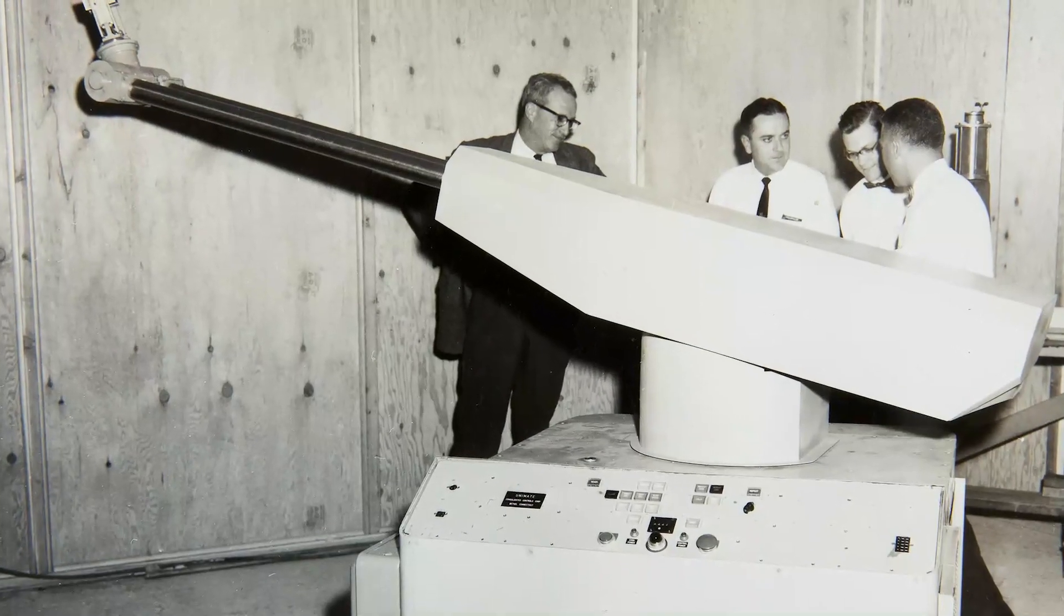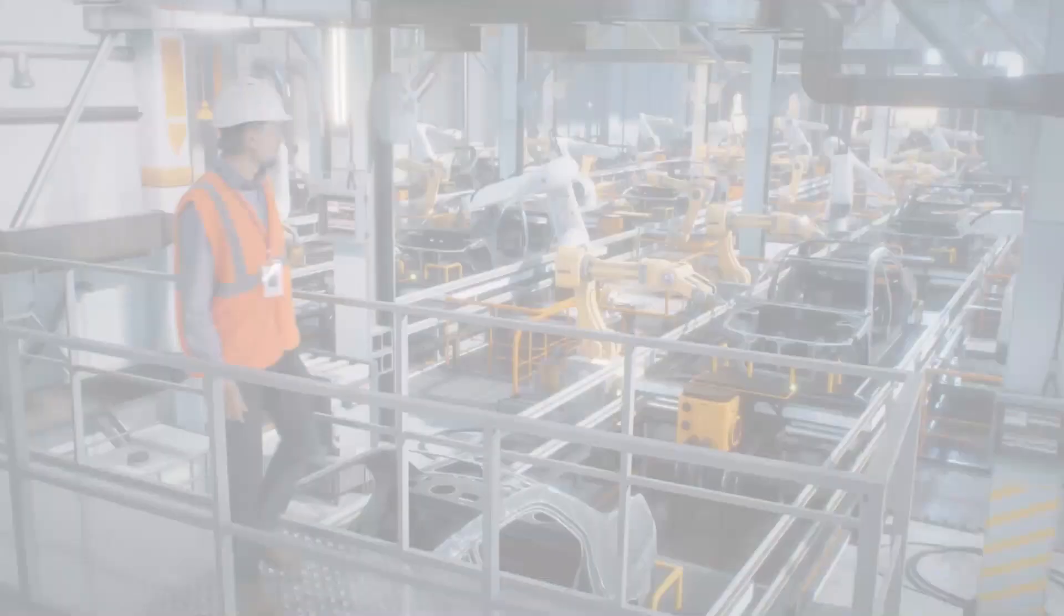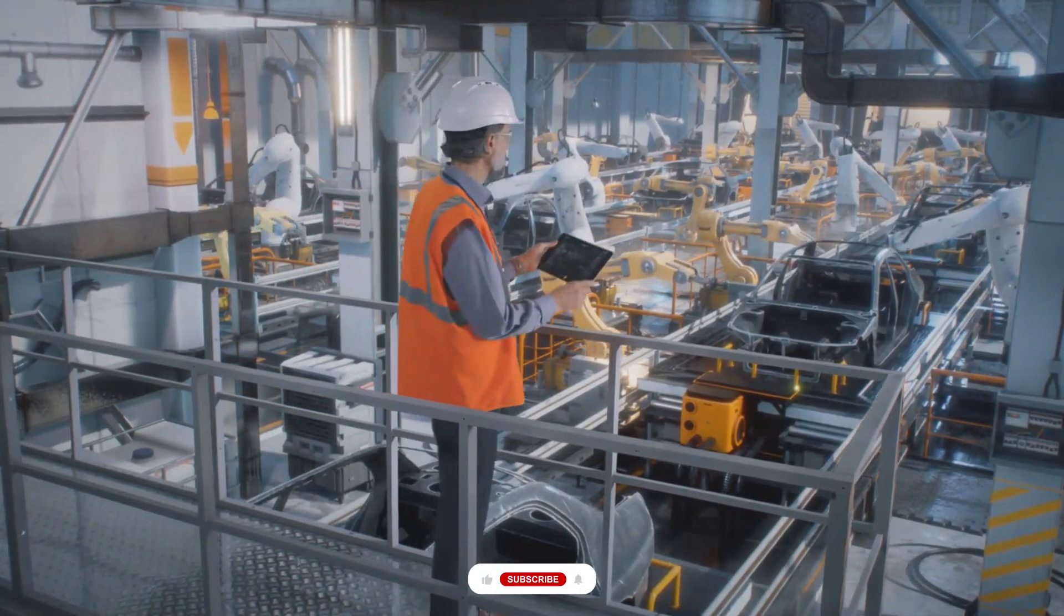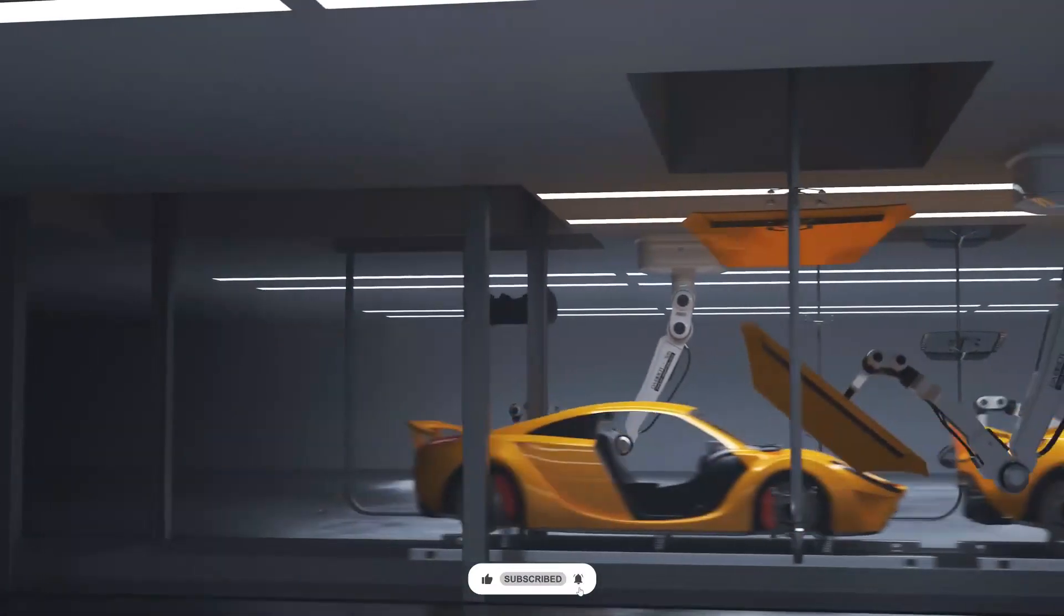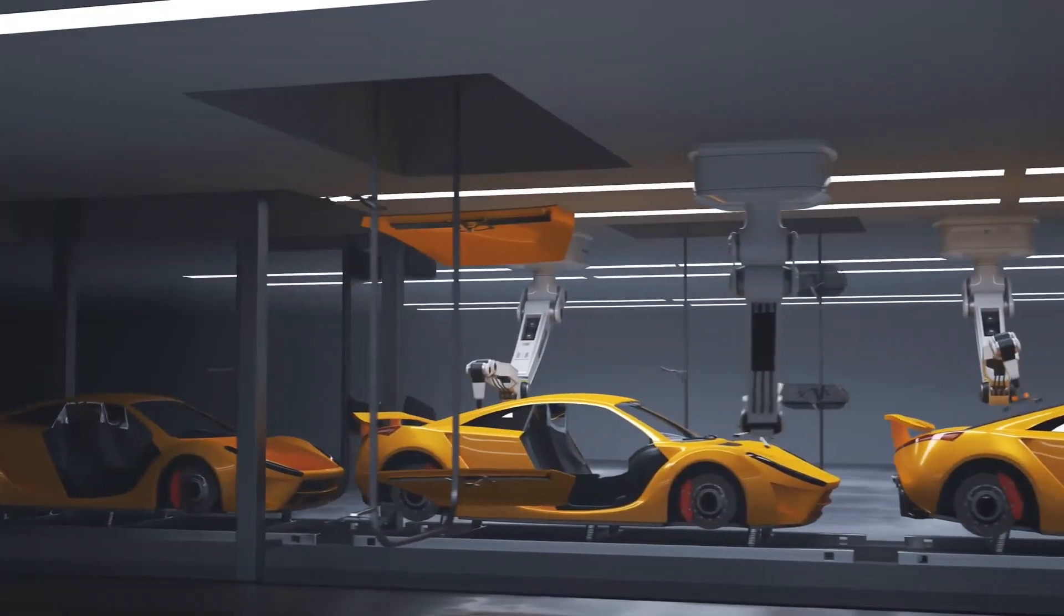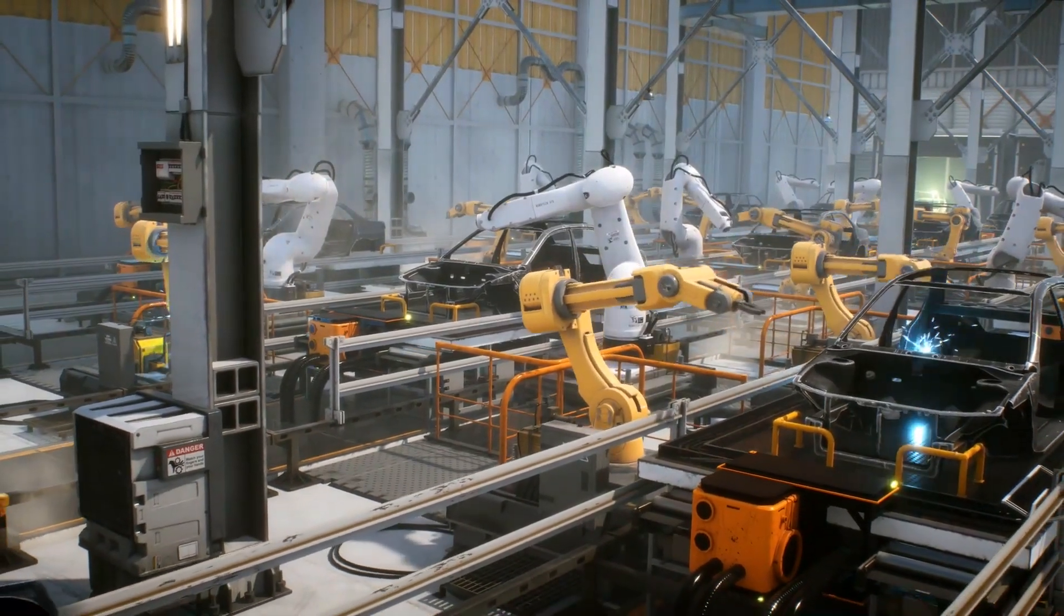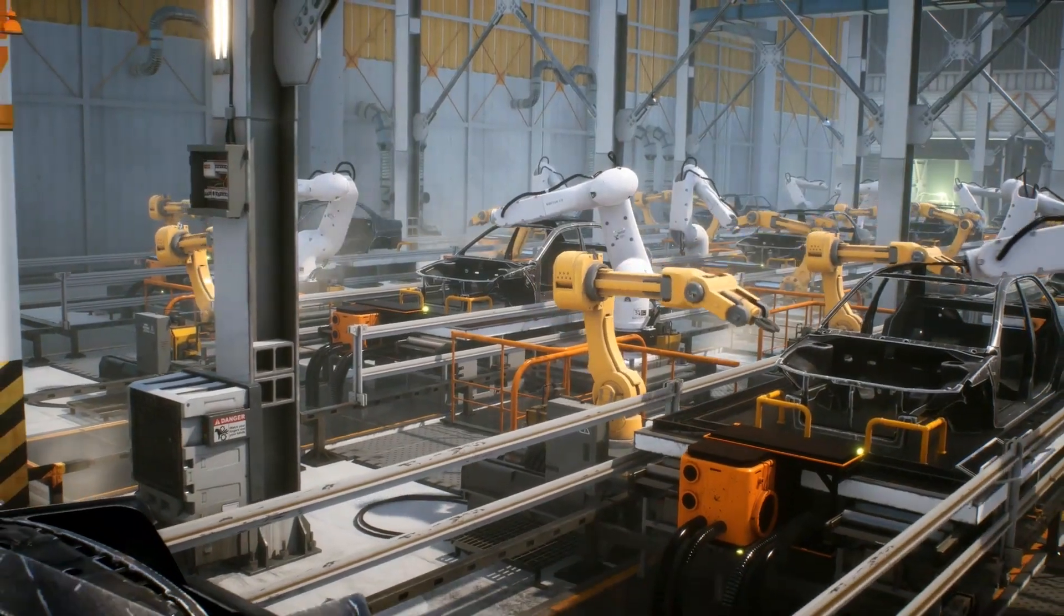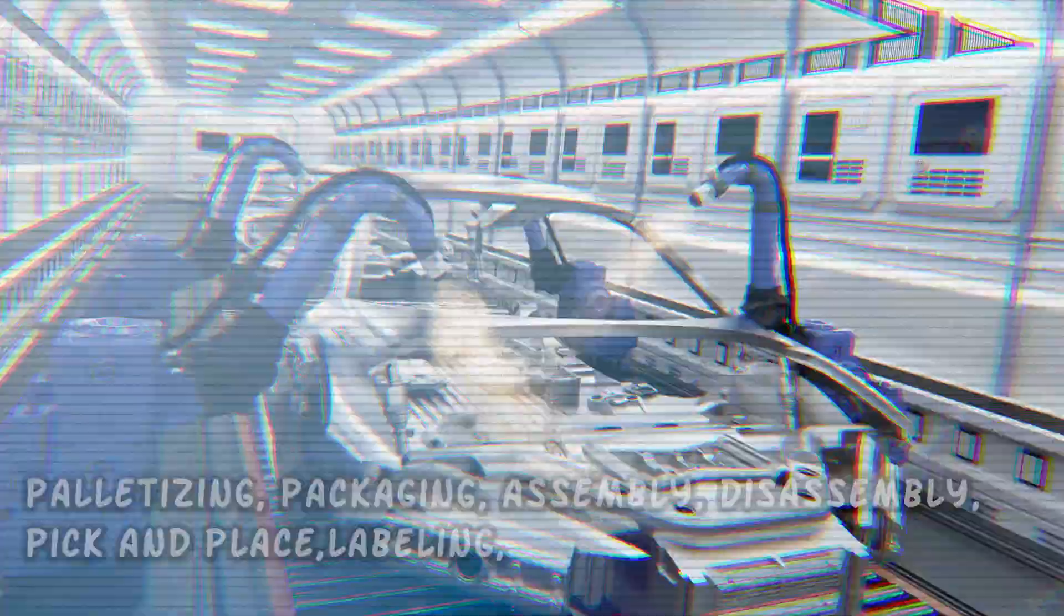Installed in a factory, a typical car assembly plant today contains hundreds of industrial robots working on automated production lines. The automotive industry is still the largest user, representing about 30 percent of the market. Factory robots are used in many applications throughout manufacturing including palletizing, packaging, assembly, disassembly, pick and place, labeling, welding, painting, product inspection, and testing.